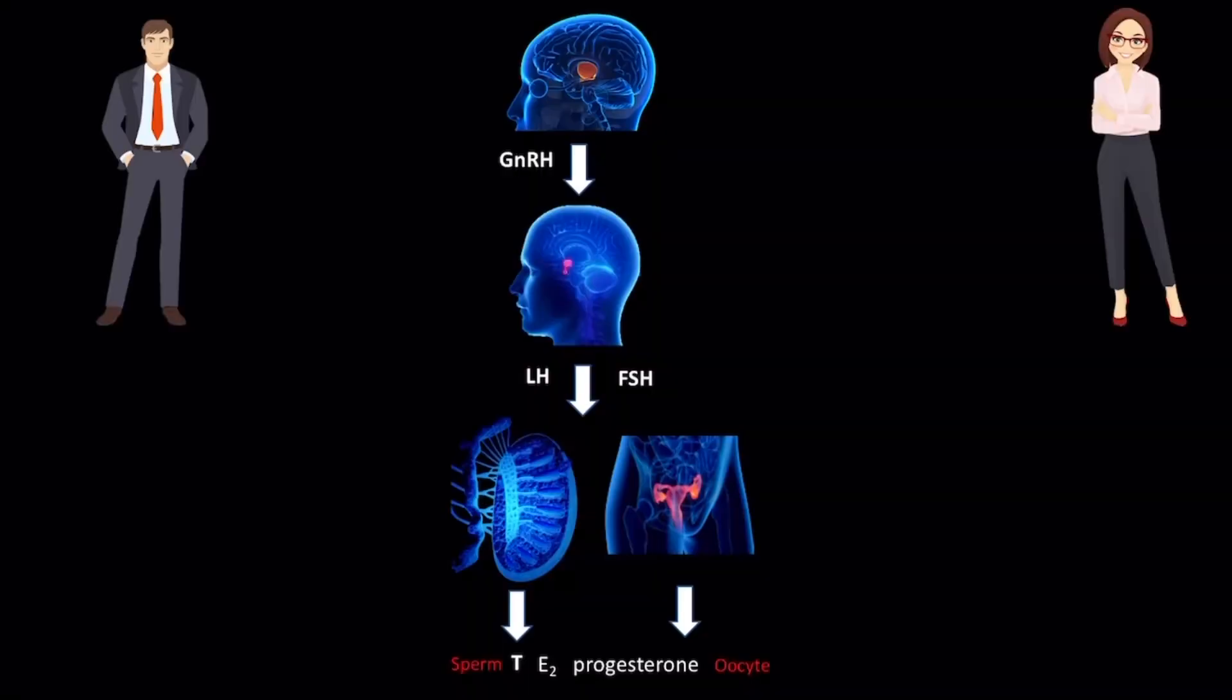To summarize, reproduction in both males and females is controlled by the pulsatile secretion of GnRH from the hypothalamus, which in turn controls LH and FSH secretion from the anterior pituitary gland. Luteinizing hormone and FSH control the development of gametes, i.e. sperm and oocytes, and the secretion of sex hormones, i.e. the production of testosterone in males and estradiol and progesterone in females.